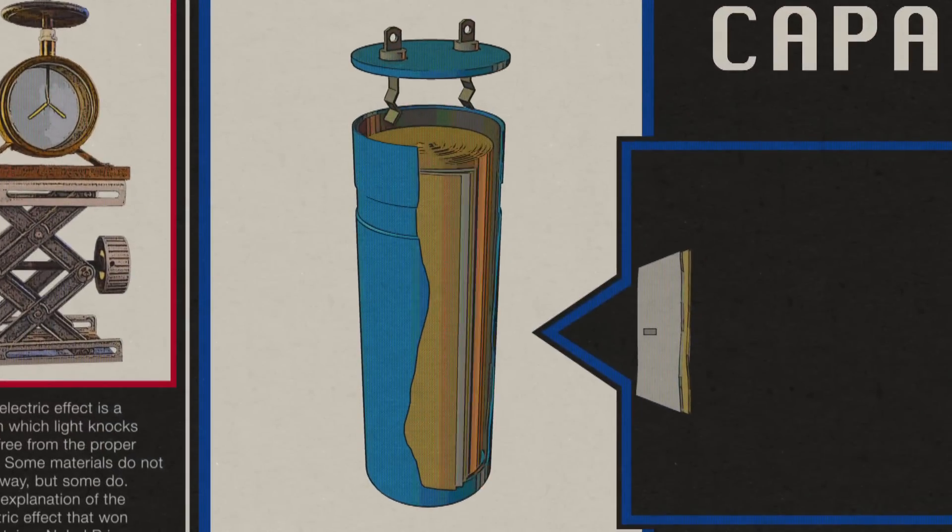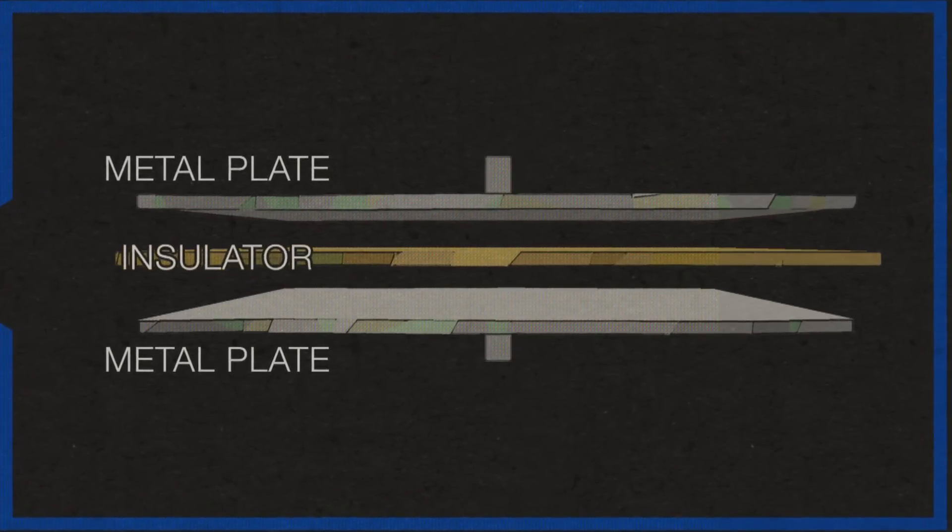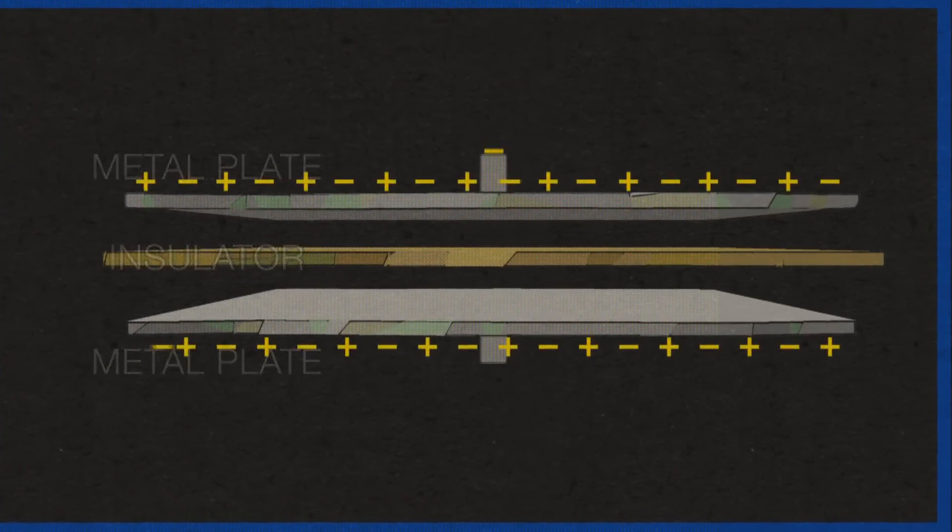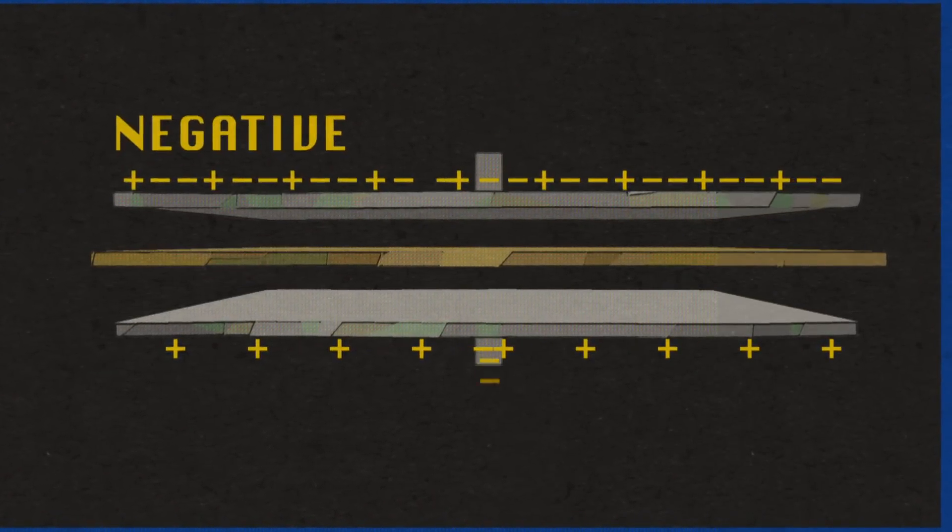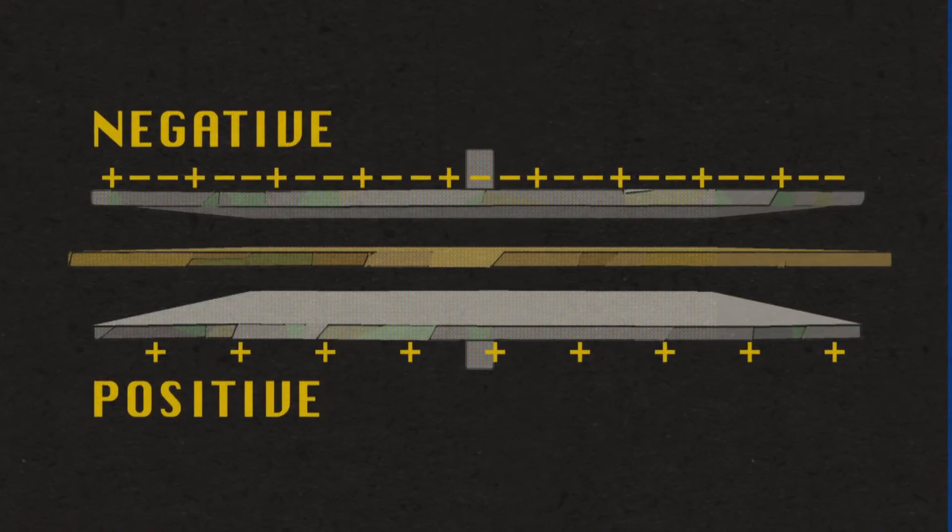What's happening here is a capacitor, which of course is two parallel plates separated by an insulator, builds up charge. Negative charge loads up on one side, positive on the other. The more charge on the plate, the less attractive the plate is for any more charge to arrive.